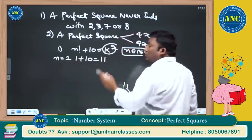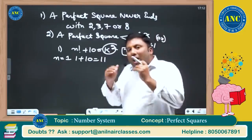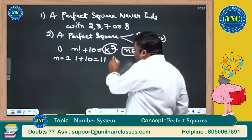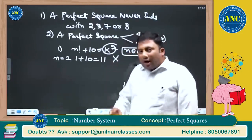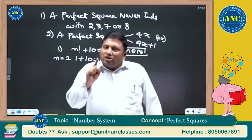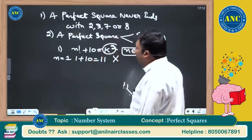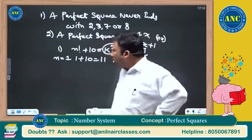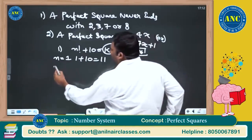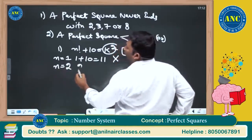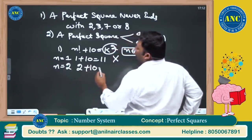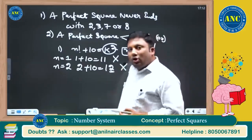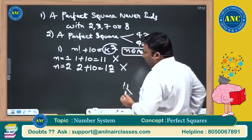A perfect square should always be of the form 4k or 4k+1. Now 11 is 4 times 2 plus 3, so it is not a perfect square. Also, please write down: any perfect square ending with digit 1 — the tens digit should be even: 9²=81, 19²=361, 29²=841, 21²=441. For n=2: 2 factorial plus 10 equals 12. A perfect square never ends with 2, 3, 7, or 8, so 12 is also not a perfect square.